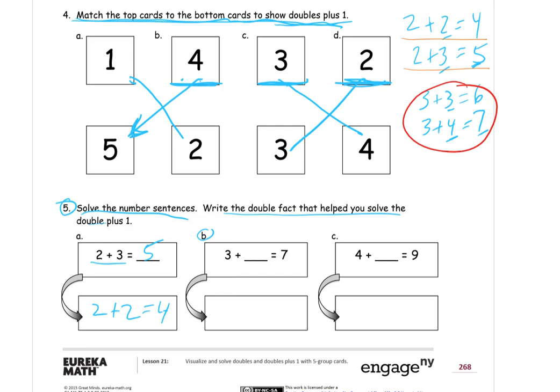So, we're looking at 3 plus, it would be 3 plus 3, right? But, it's plus 1, 4. And that one, we're thinking of 3 plus 3 for the double. That's what we added 1 to. Make it a double plus 1. 3 plus 3 is 6.